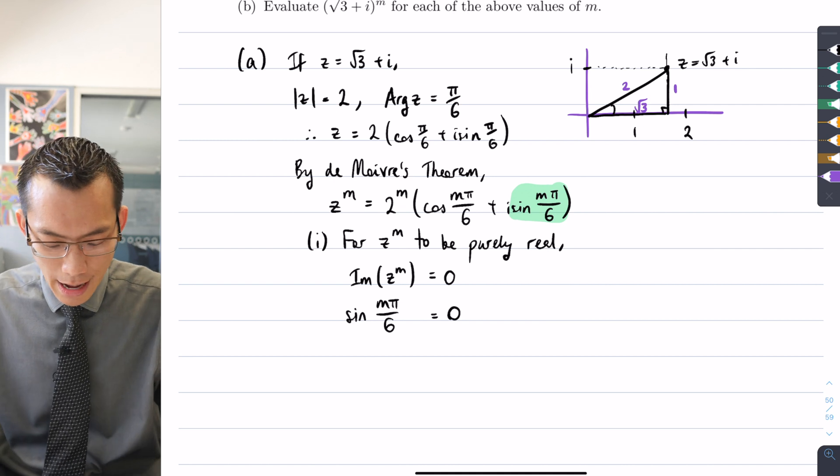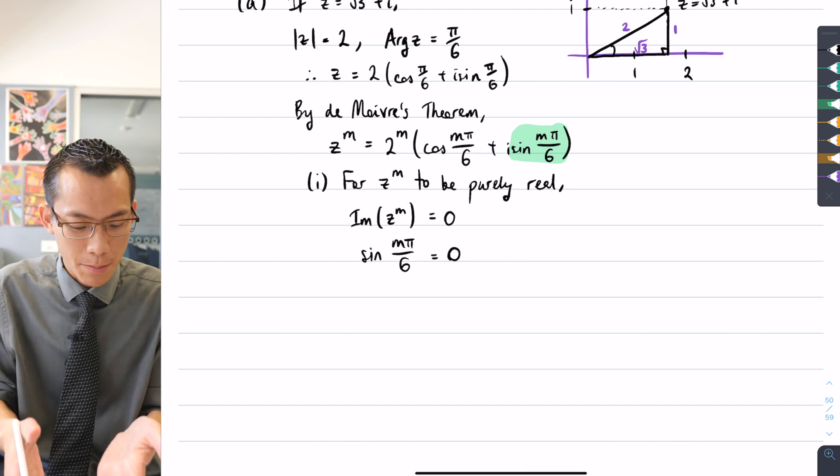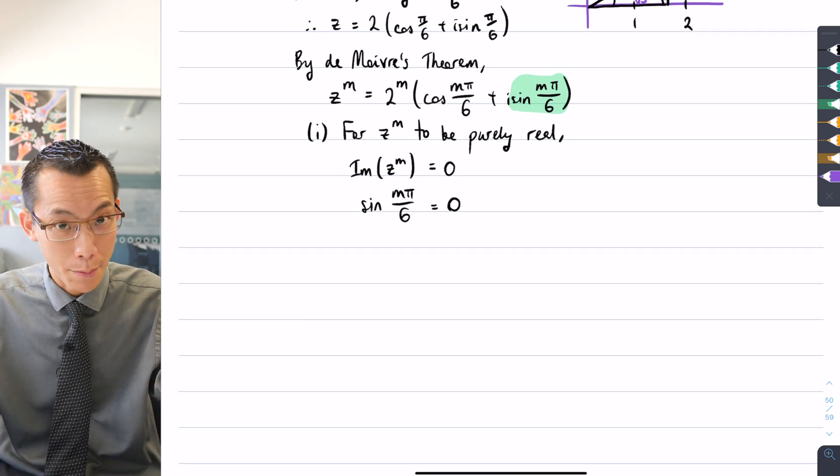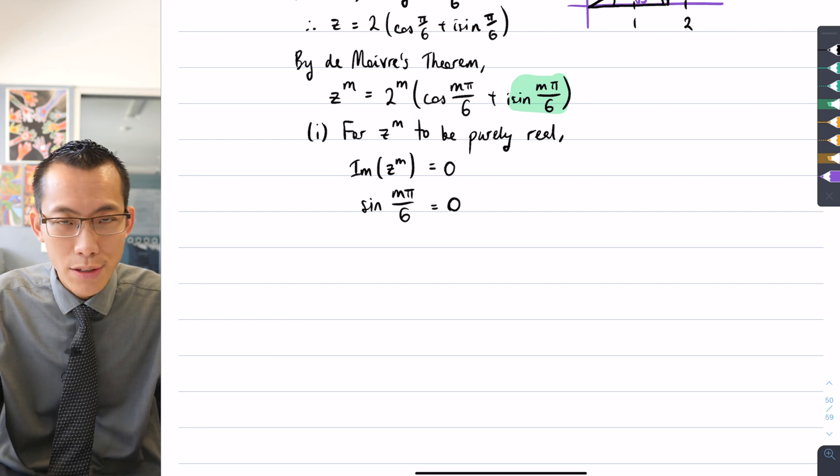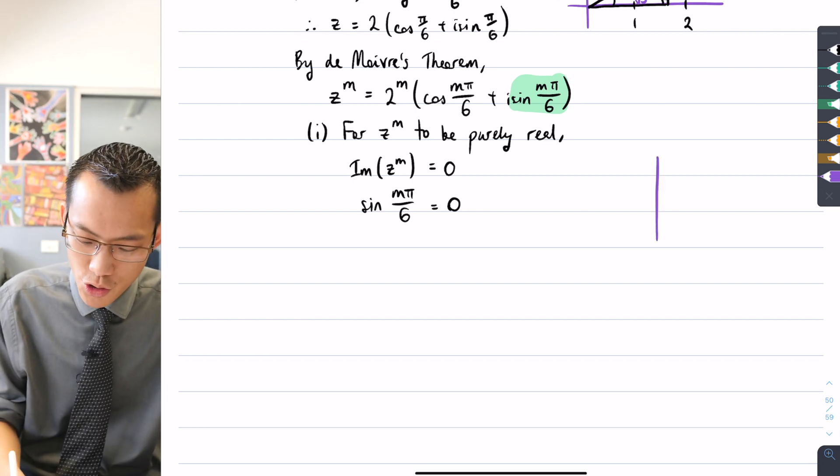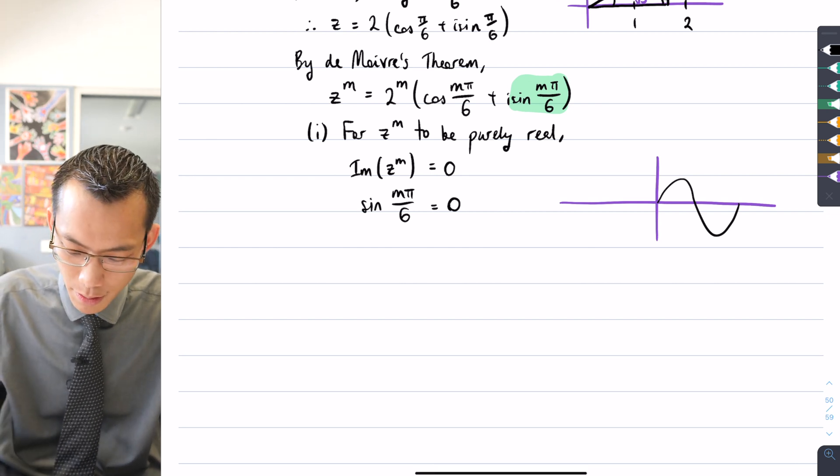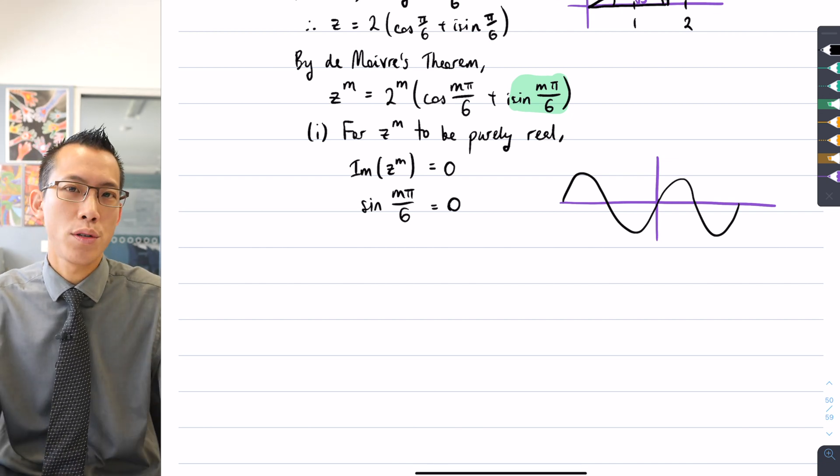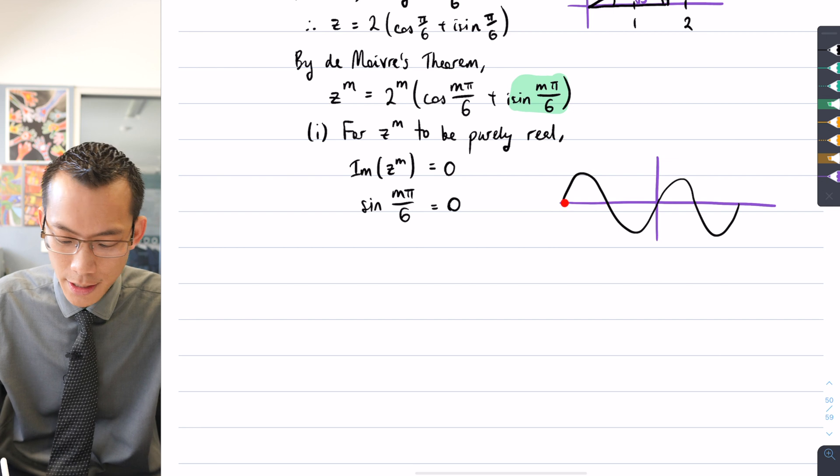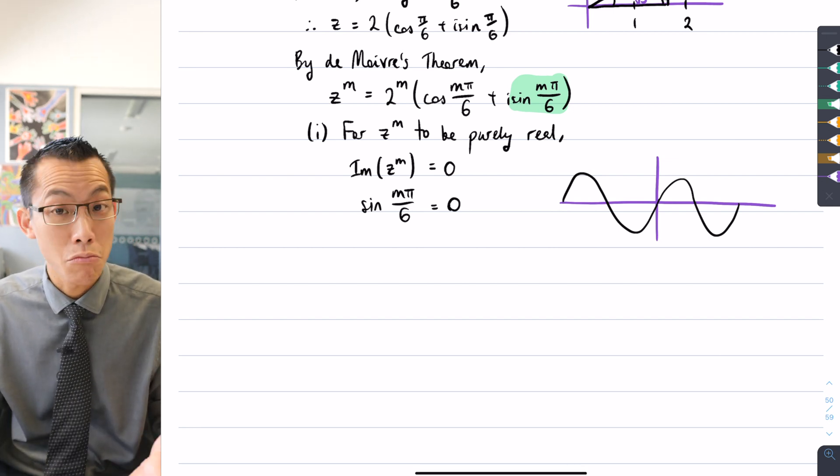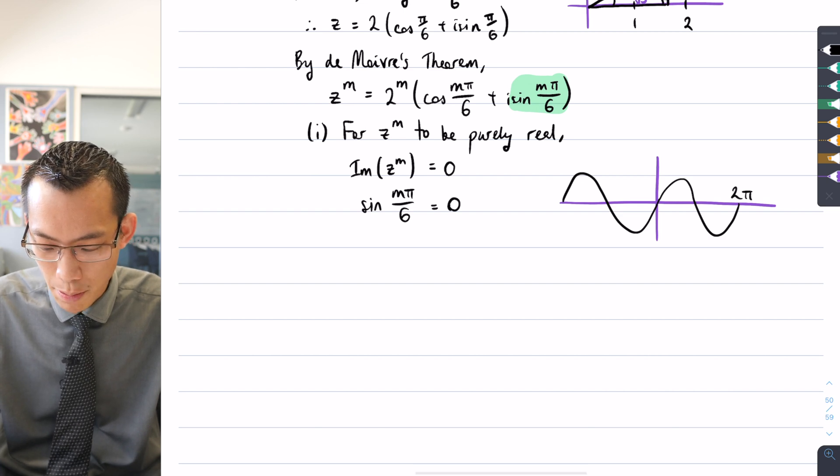At this point, it pays to be comfortable with your trigonometry. Sine of some angle equals zero—there are an infinite number of angles where sine gives zero. If we draw a graph of sine, all of those spots where the sine graph intersects the x-axis—here, here, here, and here—sine of those angles will give me zero. Because the period is 2π, I can infer all the values.